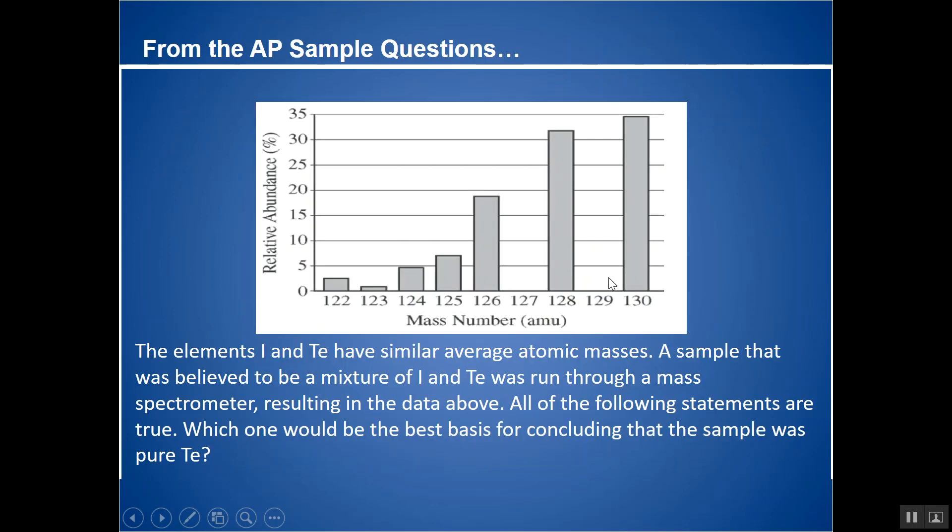Okay, so here's a question. Elements I and TE have similar average atomic masses. A sample that was believed to be a mixture of I and TE was run through a mass spec. All the following statements are true. Which one would be the best basis for concluding that the sample was pure TE?